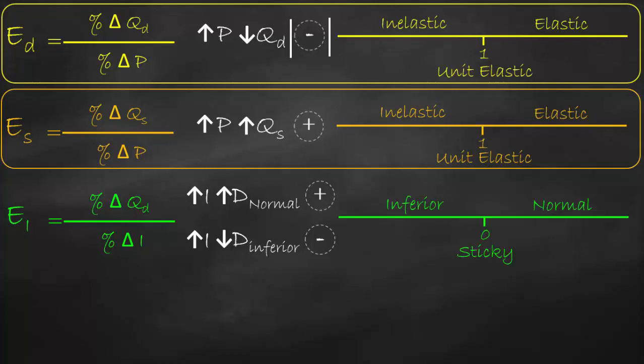For normal goods, we can further distinguish between necessities and luxuries using a second benchmark of one. If income elasticity is between zero and one, it's a necessity; if it's bigger than one, it's a luxury. For example, if income elasticity equals 0.6, it's a normal necessity — bigger than zero and less than one. If income elasticity equals two, it's a normal luxury — bigger than zero and bigger than one.